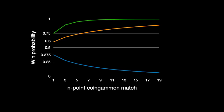If you play optimally, shown by the green line, your probability of winning the match increases from 75% to above 99% in the 11-point match, and above 99.9% in the 19-point match.